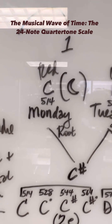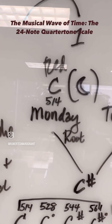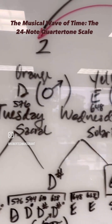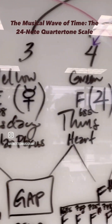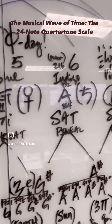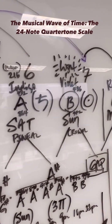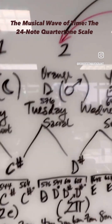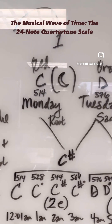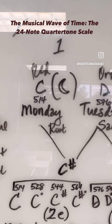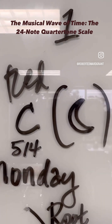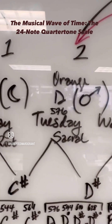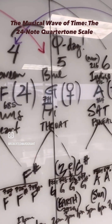We're starting off with C at 514 hertz, then going to 576, then 648, 685, 771, 864, 972, and 1028. Each of these corresponds to a day of the week — Monday being moon day. The shape of the letter C is the same as the moon, and you see all these correspondences matching up along these lines.